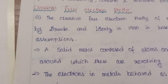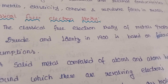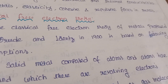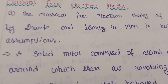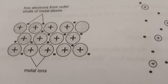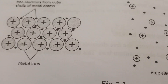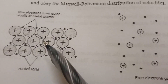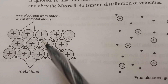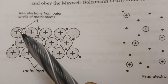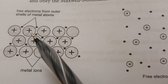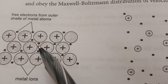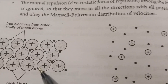The classical free electron theory was developed by Drude and Lorentz in 1900, and is based on the following assumptions. According to this theory, a metal consists of free electrons and positive ion cores. The free electrons are bound to move within the metal in a completely uniform potential field among these ion cores.